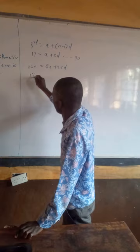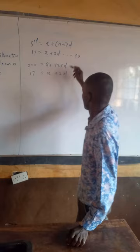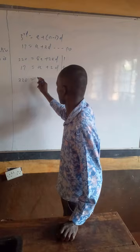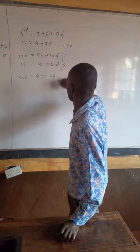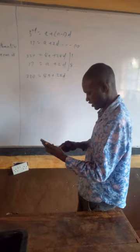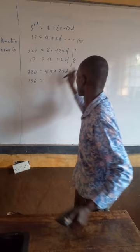We shall solve them using the elimination method. Equation 1 is 220 equals 8A plus 28D, and equation 2 is 17 equals A plus 2D. We multiply equation 2 by 8: 17 times 8 — we can read it on our calculator — gives us 136, so 136 equals 8A plus 16D.